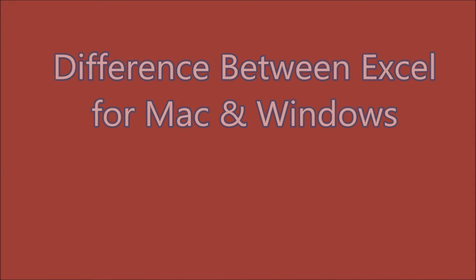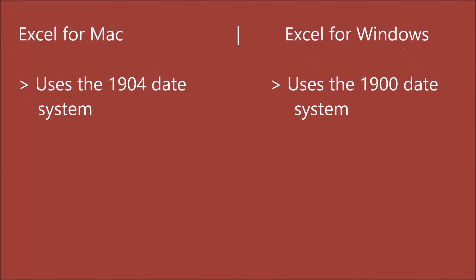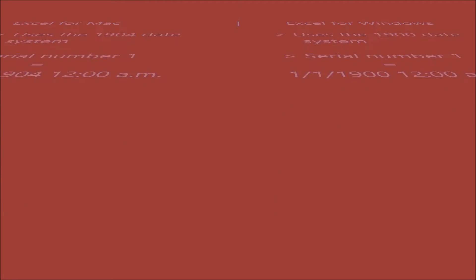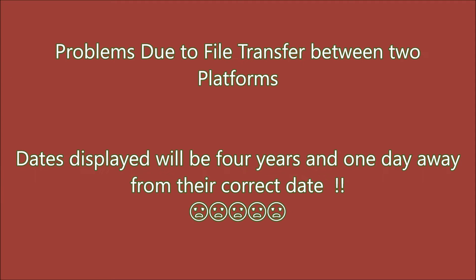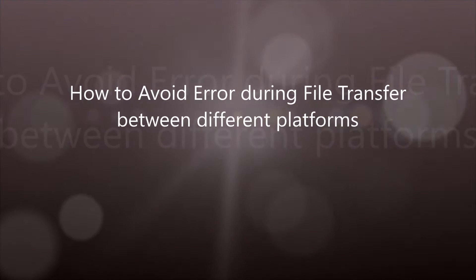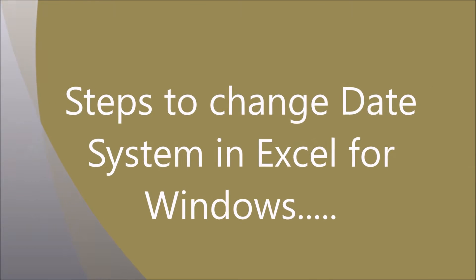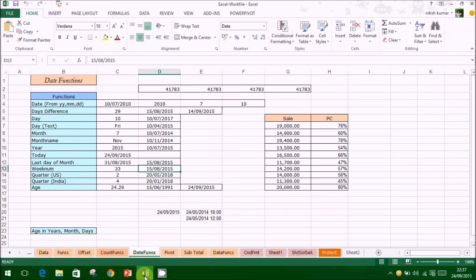In this video, we will learn about the difference in Excel for Mac and Windows in terms of date and time calculation. Mac uses the 1904 date system while Microsoft Windows uses the 1900 system. A problem will occur when a Windows platform Excel file containing date calculations is copied to Mac, as it will interpret dates differently.